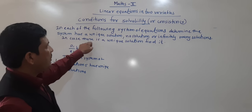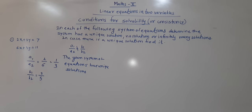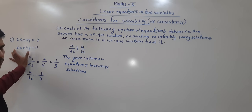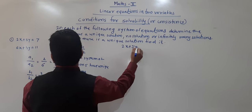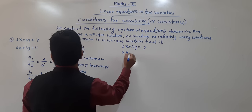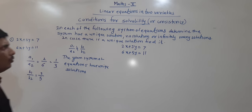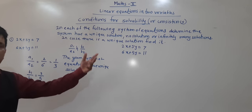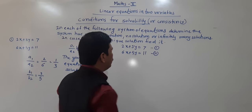In case there is a unique solution, find it. Now we need to find the unique solution. We will use both equations: 2x + 3y = 7 and 6x + 5y = 11. They have not specified any method, so we can use any method.